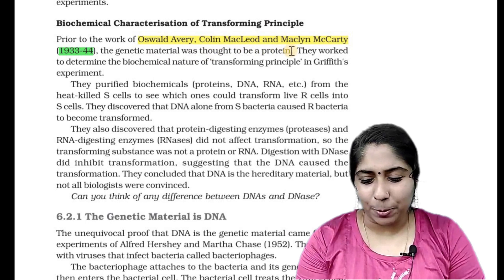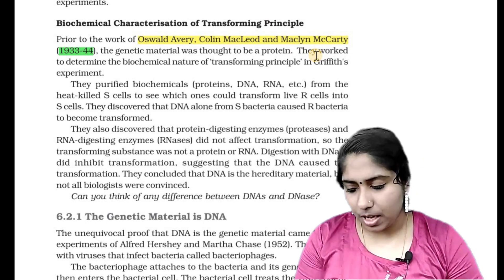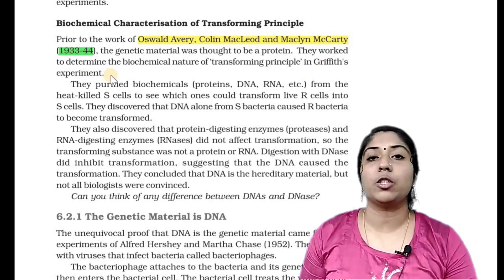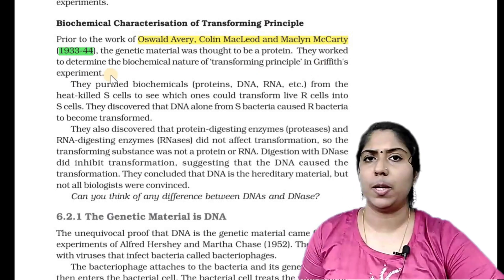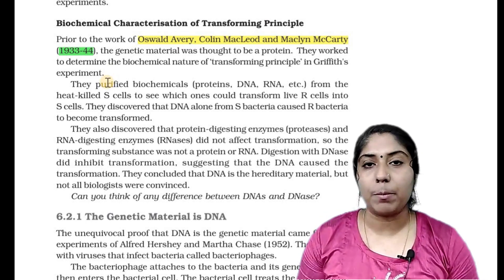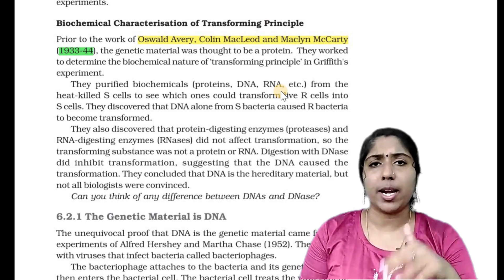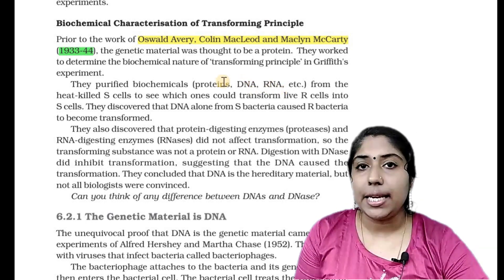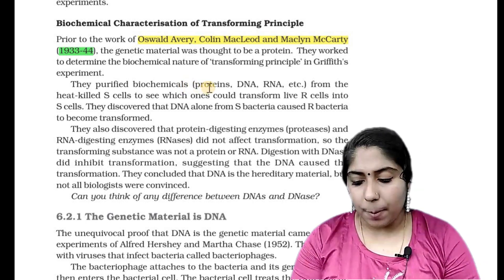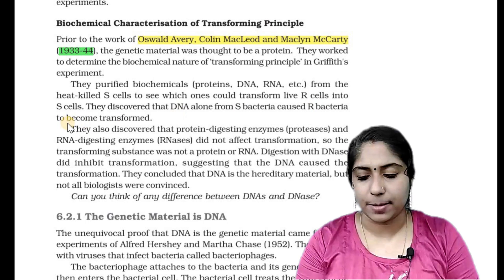At that time, genetic material was thought to be a protein. They worked to determine the biochemical nature of the transformation principle in Griffith's experiment. They purified biochemicals such as proteins, DNA, and RNA from the heat-killed S-strain to see which one could transform the R-cells into S-cells.